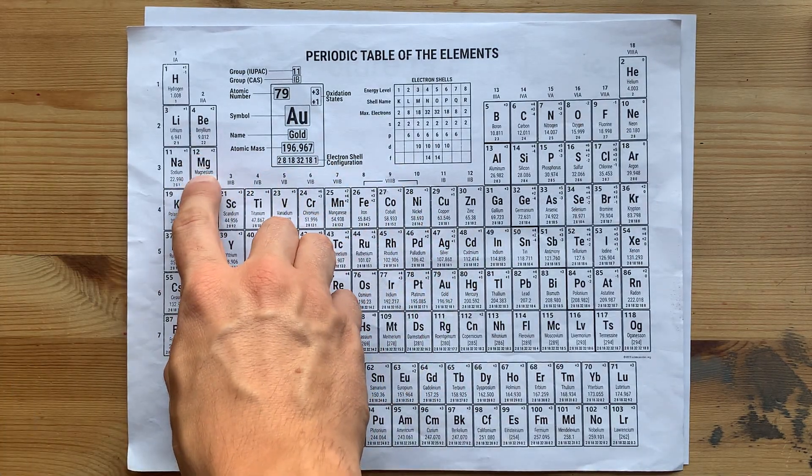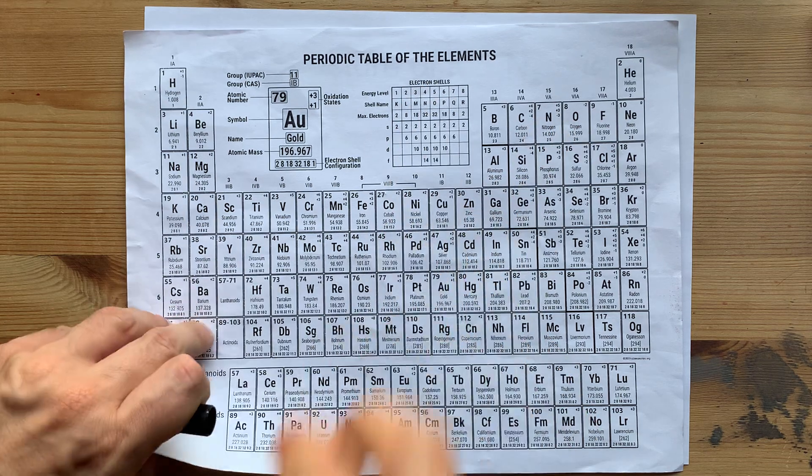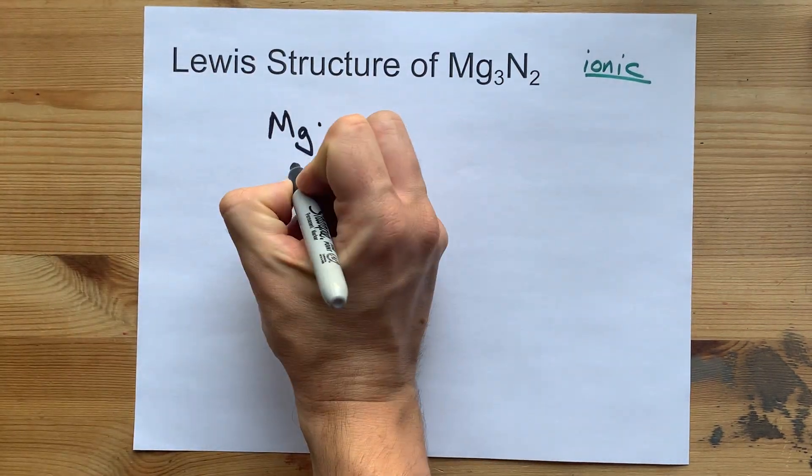Let's investigate magnesium in group 2, has 2 valence electrons, 1, 2.